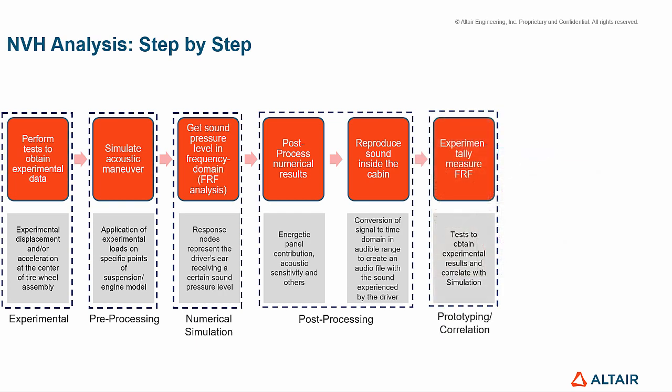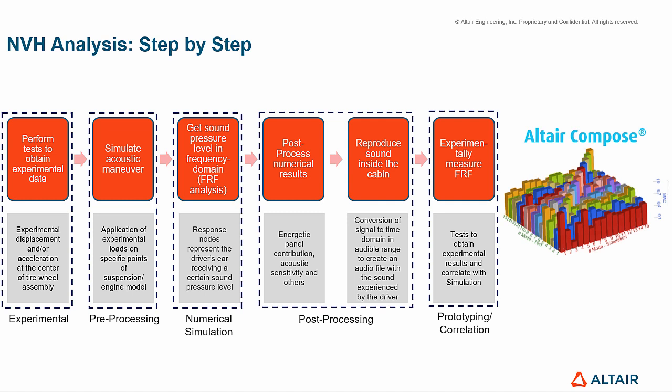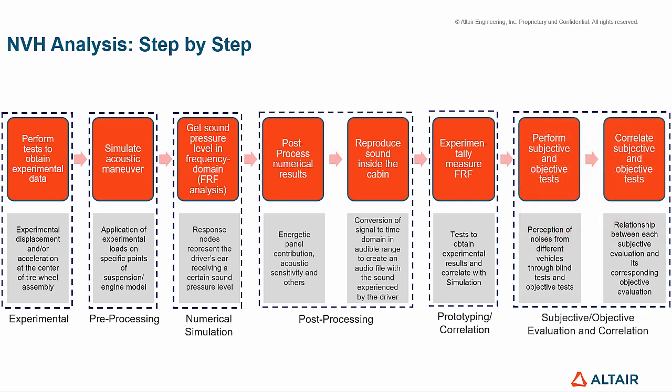Then, prototyping is the phase to experimentally measure the frequency response function, carrying out tests to obtain experimental results and correlate them to simulation. Once multiple physical tests are very costly, having major simulation results helps to reduce prototyping and consequently the costs. This image shows one example of a criterion visualized with Compose to compare both analyses. The next step is to perform subjective and objective tests to understand the perception of noises from different vehicles or configurations through experiments such as blind tests, and finally correlate them to understand the relationship between each subjective and objective evaluation.